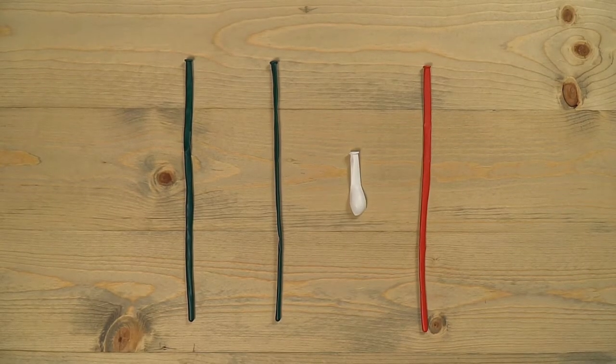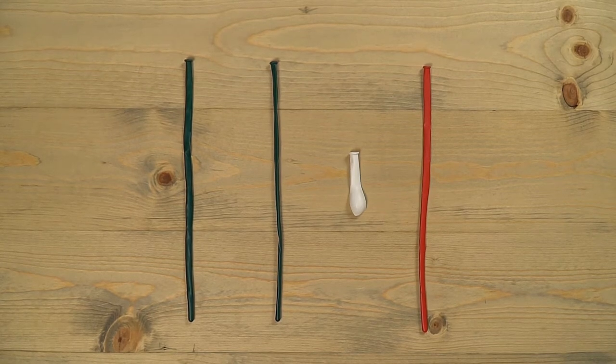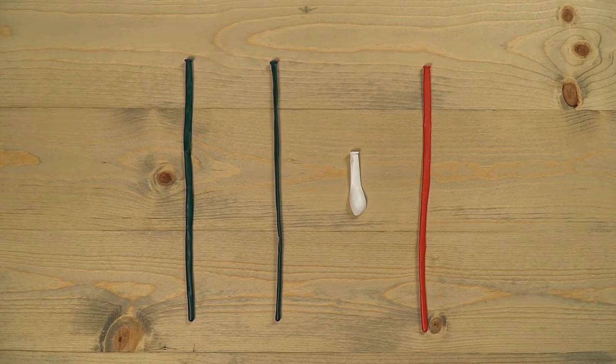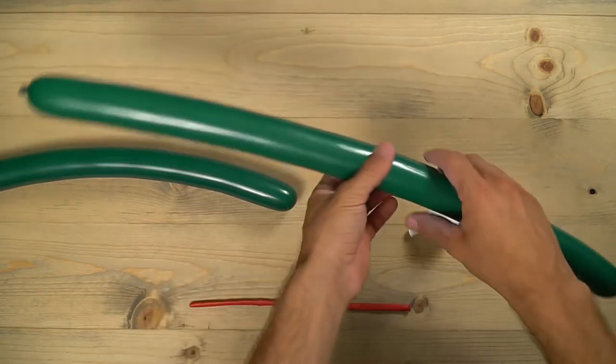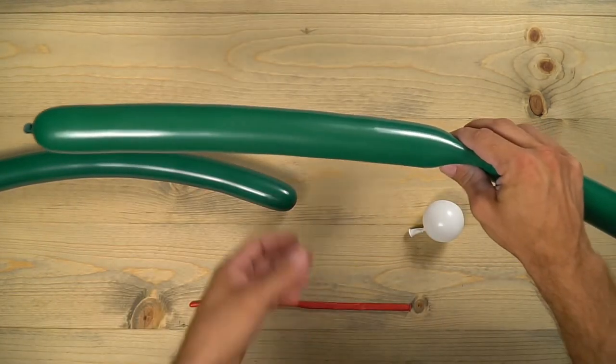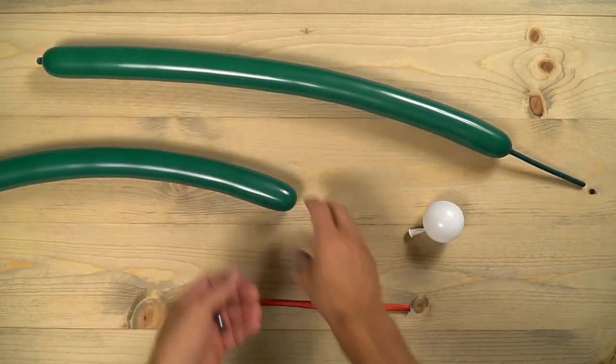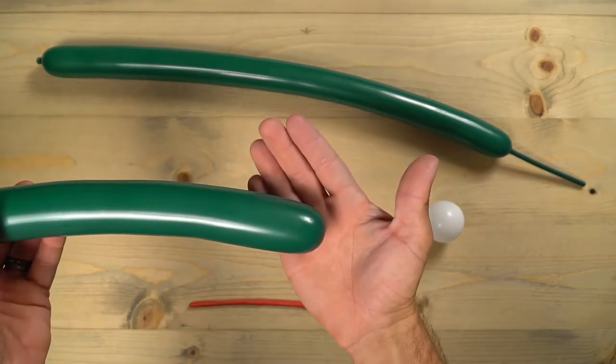For this balloon you're going to use three 260s. I'm using two greens and a red, and also a five-inch white round. Blow up that first one just using that much there for the head. The other one you want to blow up all the way; that's going to be for the rest of the snake body.